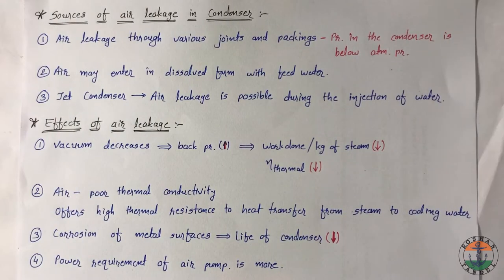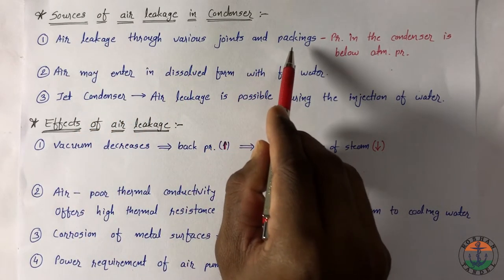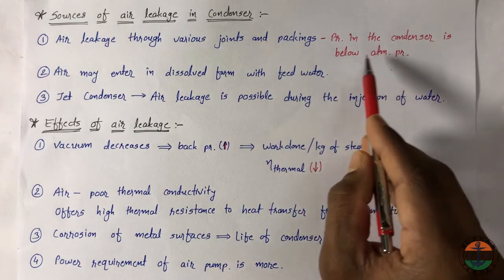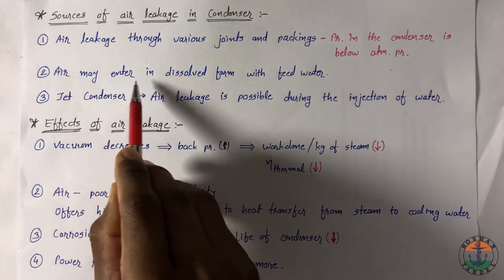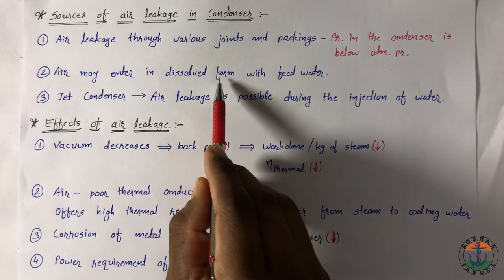Now sources of air leakage in a condenser. Air leaks through various joints and packings into the condenser as it is maintained at a pressure below atmospheric pressure. Air may enter into a boiler with feed water in dissolved form.